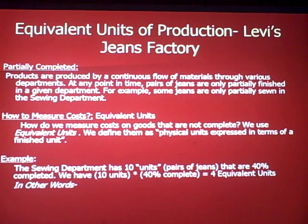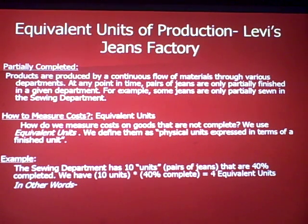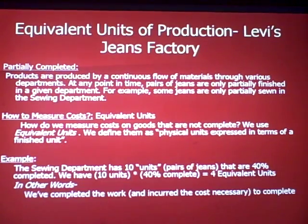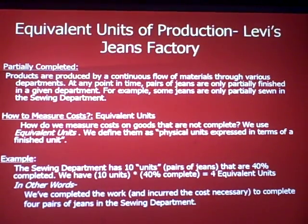We're going to look at the number of units that we think are finished in terms of cost. Equivalent Units are defined as physical units expressed in terms of a finished unit. Here's an example: a pair of jeans that are 40% complete. We take the number of units — 10 — times the percentage complete, 40%, which means we have 4 equivalent units. In other words, we've completed the work and incurred the cost necessary to complete four pairs of jeans in the sewing department.